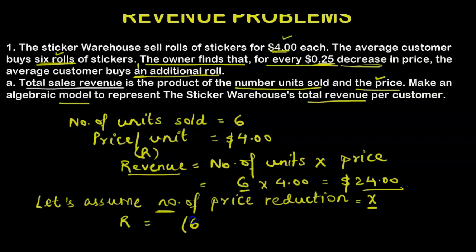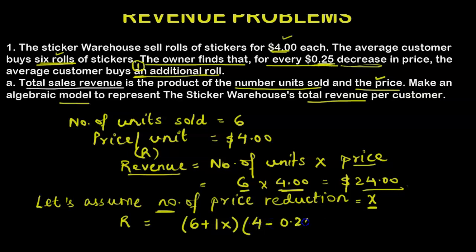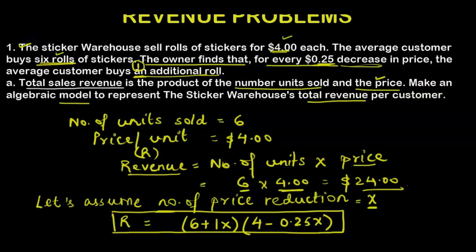Six is the base number of units sold, but since units sold increase by one per reduction, we have six plus one times x. When it comes to price, it decreases by 25 cents per reduction, so price is four minus 0.25 times x. Therefore the algebraic model for revenue is R equals (6 + x)(4 − 0.25x). This takes into account both statements from the question, completing Part A.